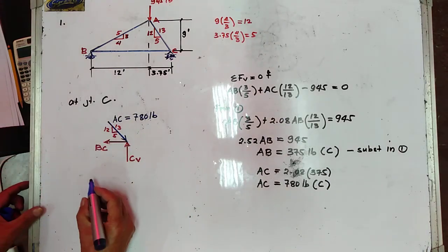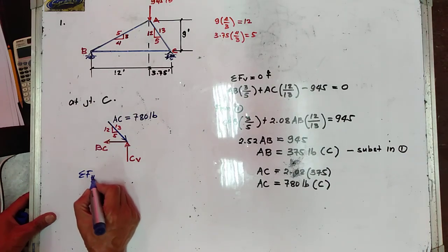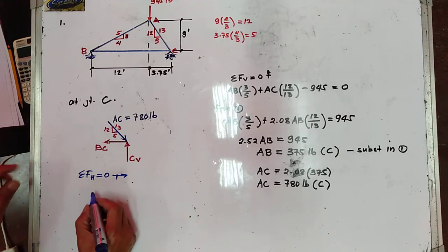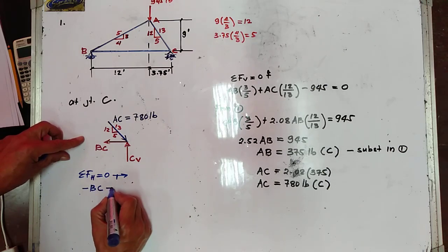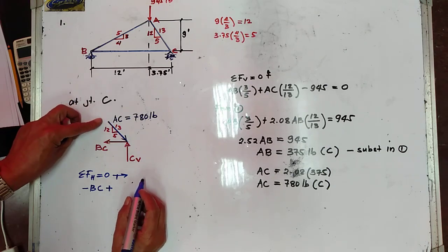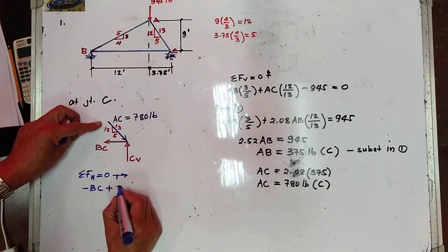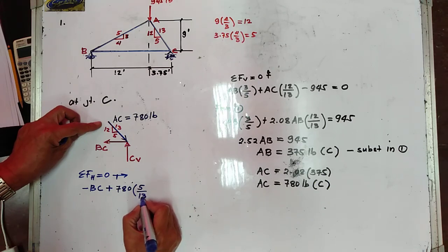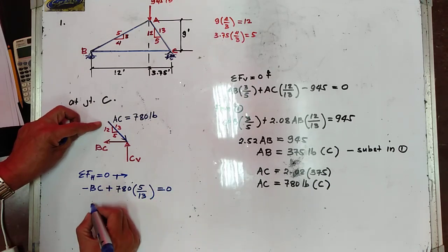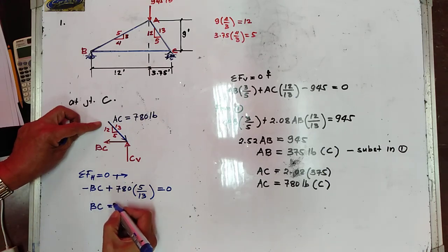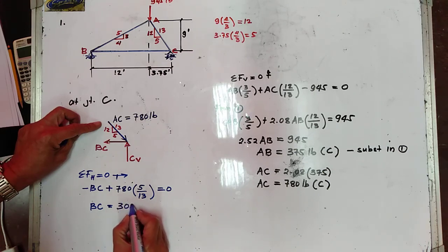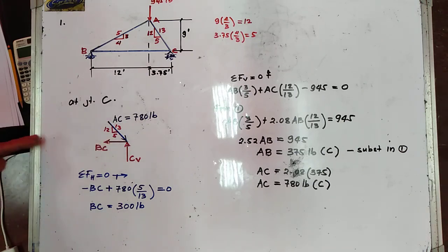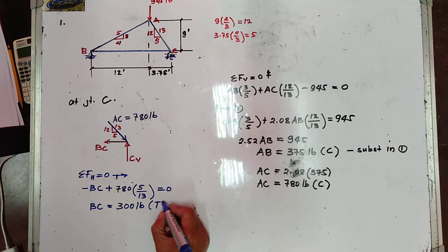Summation of forces horizontal equal to zero, to the right positive: −BC + 780 × (5/13) = 0. Therefore BC = 300 pounds. We get a positive value, so the assumed direction is correct — BC is going away from the joint and is therefore in tension.